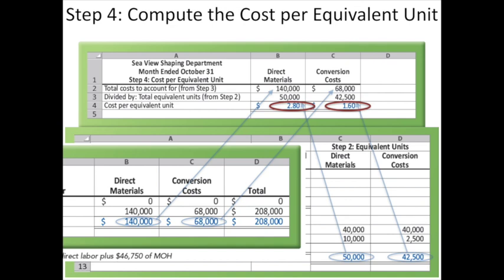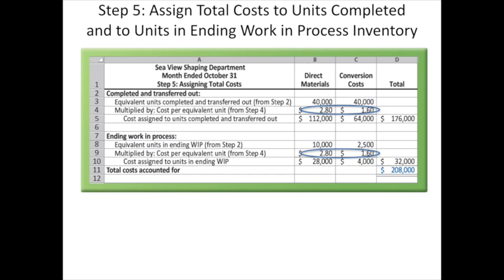Once we have computed our cost per equivalent unit, we can use this cost to assign total cost to units that are completed and transferred out, as well as cost in our ending work in process. The equivalent units transferred out was 40,000 units, multiplied by the cost per unit calculated in step 4, giving us $112,000 assigned to units completed and transferred out for direct materials, and $64,000 for conversion.